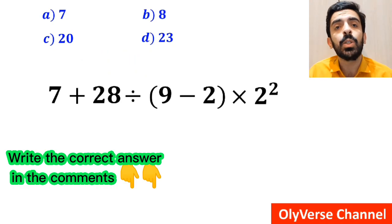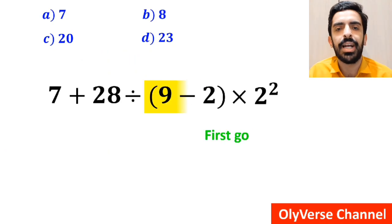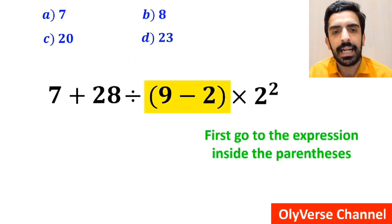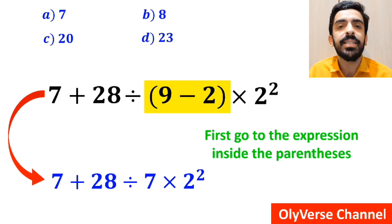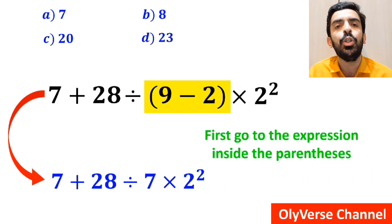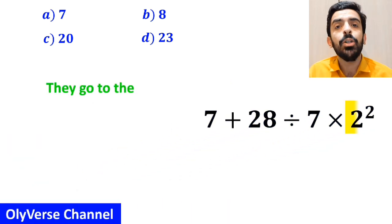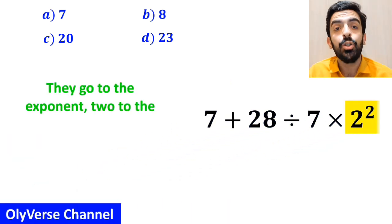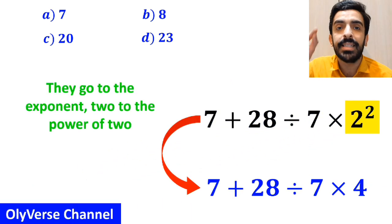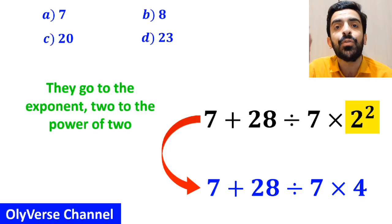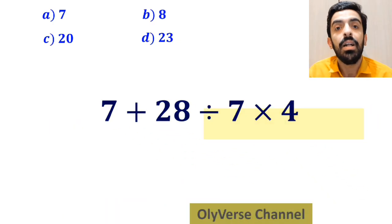Some other people, to solve this question, first go to the expression inside the parenthesis, and instead of this expression, they write 7 plus 28 divided by 7 times 2 to the power of 2. In the next step, they go to the exponent 2 to the power of 2, and simplify to 7 plus 28 divided by 7 times 4.